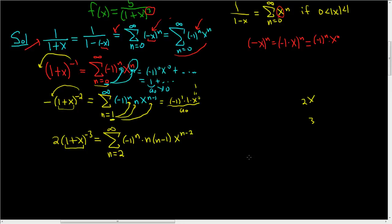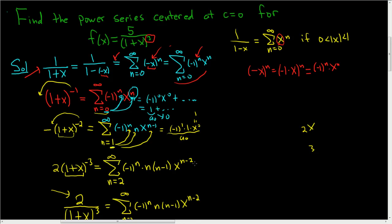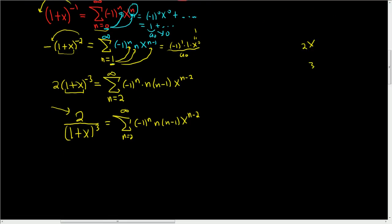Almost there. We are almost done. So it's not a long problem. It's just a little bit tricky. So I'm going to bring this back downstairs. We have 1 plus x cubed. And this is equal to the infinite sum as n runs from 2 to infinity of negative 1 to the n, n, n minus 1, x to the n minus 2. Now, we wanted a 5 here in the original question. Let me scroll up so you see it. See, we wanted the power series for this guy, except we have a 2. So now we can fix it, right? How do we fix it? Well, we can multiply by 5 halves. If I multiply the left-hand side by 5 halves and multiply the right-hand side by 5 halves, then boom, there it is.